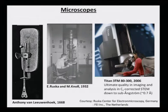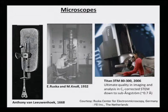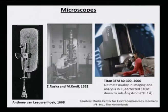Ruska and Knoll's contribution is extremely significant as far as the first microscope is concerned. From 1932 to 2006 — about 80 years — transmission electron microscopes have seen drastic development. Using the Titan microscope, now sold across the whole world by FEI, one can reach a resolution of less than 1 Angstrom. Although the theoretically possible resolution is 1 picometer, by correcting different lenses it is possible to achieve a resolution of approximately 0.6 Angstrom, the best achieved today.